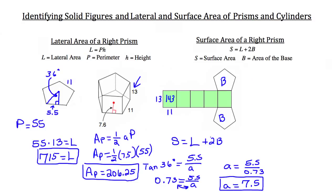That surface area, like we said, was just equal to that lateral area, 715, plus 2 times that base area, which was the 206.25. So surface area is equal to 715 plus 412.5, which gives us a total surface area of 1127.5 units squared.